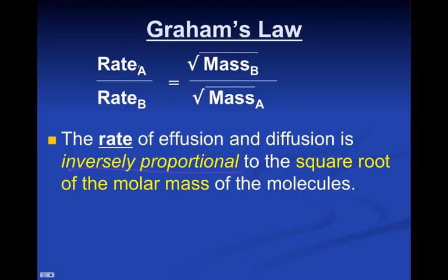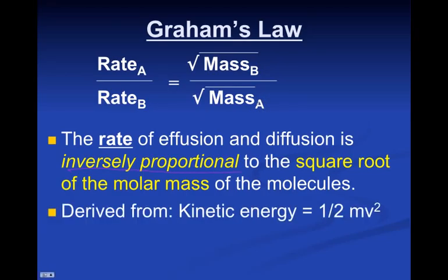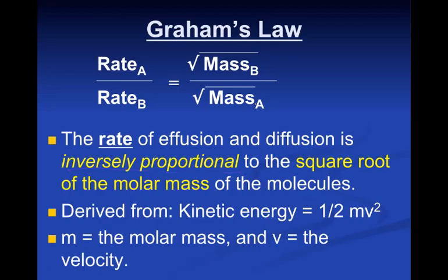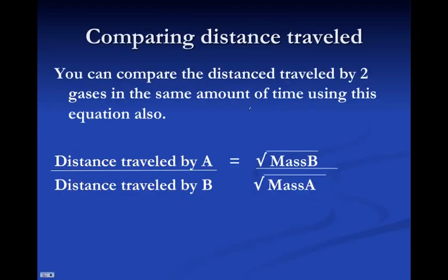So the rate of A on top of one side, then the square root of the molar mass of A has to be on the bottom of the other. So we can do some calculations. Not only can we do rate, we can also do distance. So the distance traveled by one gas over the distance traveled by another is inversely proportional to the square root of their molar masses again.